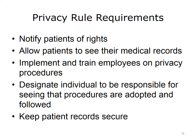One of the basic requirements of the HIPAA Privacy Rule is to notify patients about their privacy rights and how their information can be used. In addition, the HIPAA Privacy Rule gives patients the right to see their medical records. The Privacy Rule also has several requirements that relate to office policies and procedures. Covered entities must adopt and implement privacy procedures and train their employees to follow the procedures. Covered entities must also designate an individual to be responsible for ensuring that the privacy procedures are followed. Finally, covered entities must secure patient records so they are not easily accessible to those who do not need them.